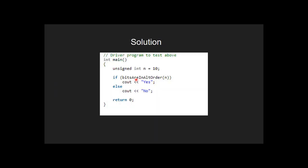Let's see the code. In the main function, we call the bitsAreInAltOrder function and pass the value of n.